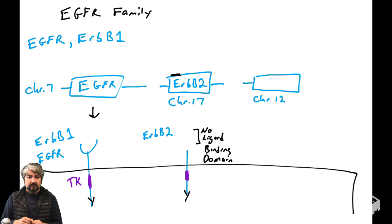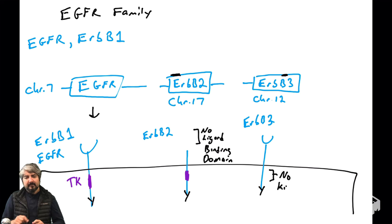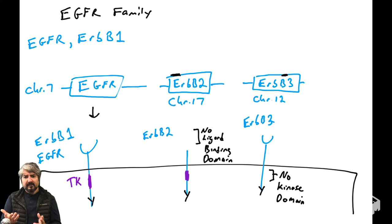There's another gene on chromosome 12 with homology to the EGFR and ERBB2 genes — named ERBB3. It's drawn a little differently. What I'm drawing in purple is the tyrosine kinase domain — and I left it out because ERBB3 has evolved away its kinase domain. It doesn't function as a kinase.